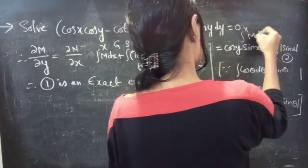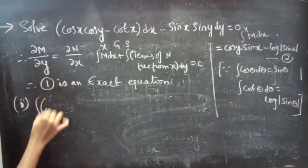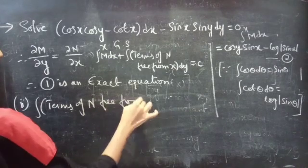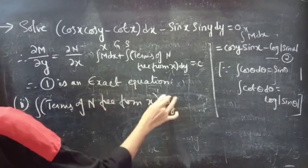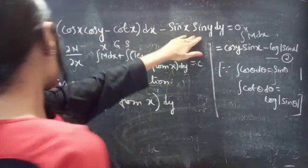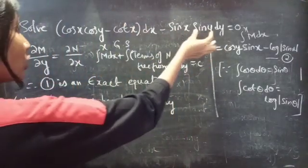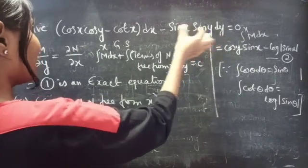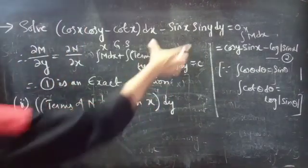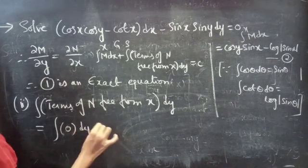Now find the integral of terms of N free from x into dy. Here N equals minus sin(x)sin(y). We don't have any terms free from x — we have a product of a term containing y and sin(x), which contains x. So we can't take anything from N free of x. Write this as 0. Consider this as equation 3.